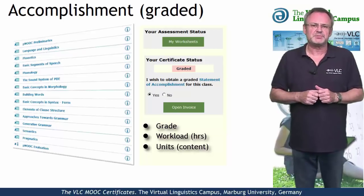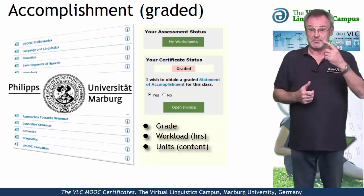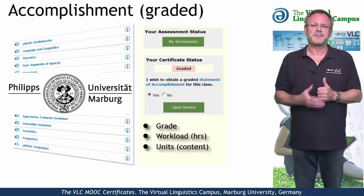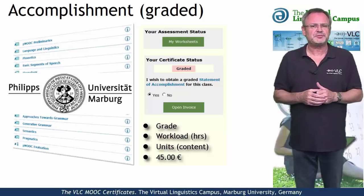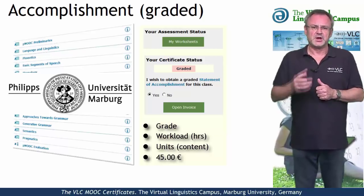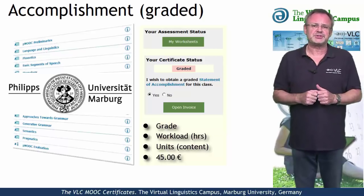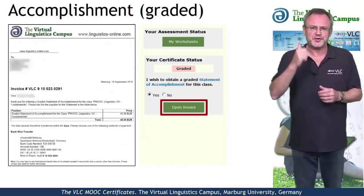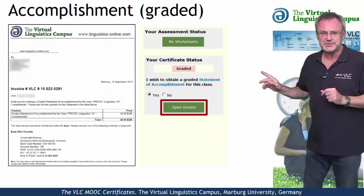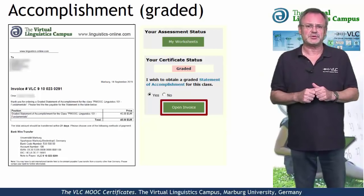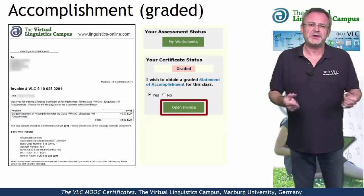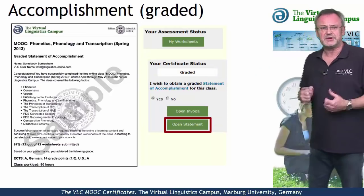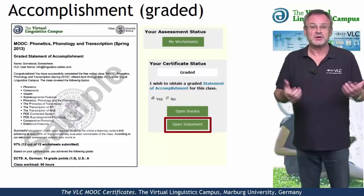This graded statement of accomplishment is issued by Marburg University in conjunction with the Virtual Linguistics Campus, and it involves a fee of currently 45 euros. Once you have satisfied the conditions and decided to obtain such a certificate, you first have to open the invoice and transfer the money to Marburg University. Once your payment has been accepted, you can download your personal graded statement of accomplishment via mouse click.